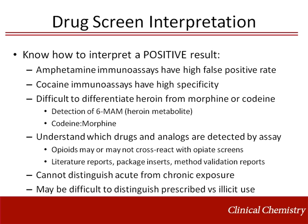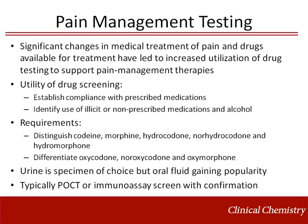Positive results indicate exposure but cannot distinguish acute from chronic exposure. Delineating prescribed versus illicit use may be difficult with a qualitative drug screen due to poly drug use and contamination of street drugs. There have been significant changes in the medical treatment of pain, including availability of new drugs, leading to increased utilization of drug testing to support pain management therapies. Drug screening is used to establish compliance with prescribed medications and identify use of illicit or non-prescribed medications and alcohol. Testing for this purpose must distinguish codeine, morphine, hydrocodone, norhydrocodone, and hydromorphone. Urine is the primary specimen, but oral fluid is gaining popularity for such applications. Testing typically involves a point-of-care test or laboratory immunoassay screen with follow-up confirmation by a chromatographic method.